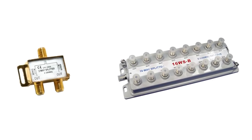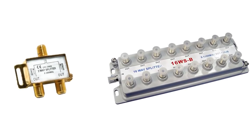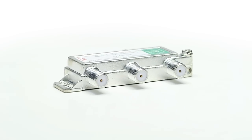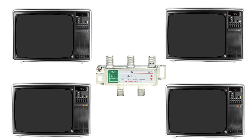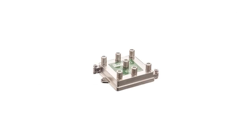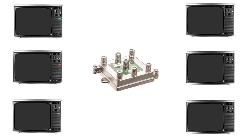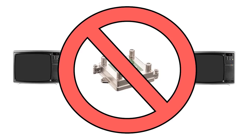We also carry splitters from 2 to 16 ports. When choosing a splitter, it is important to use one that closely matches your application. For example, if you have 4 TVs, you want to install a 4-port splitter. It is important not to choose the biggest splitter you can find. If you use a 6-port splitter, all 6 ports will receive an equal signal regardless of whether the device is on or even if the port is unused. Too many splits can cause too much loss in the system.